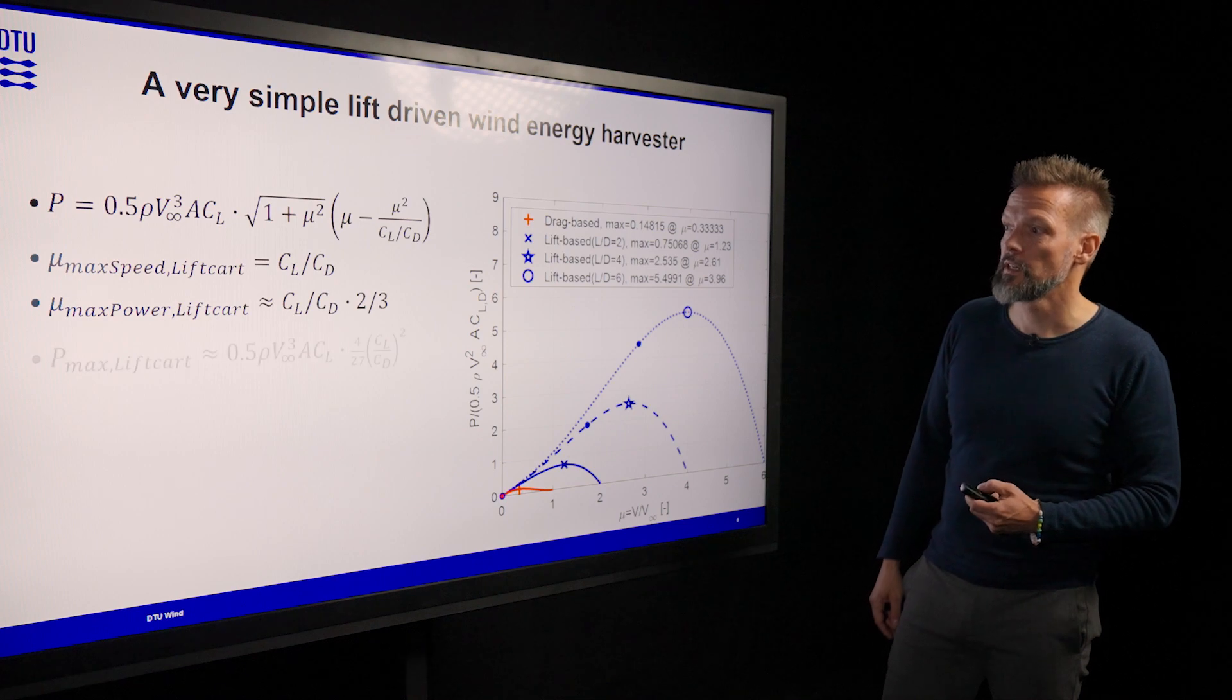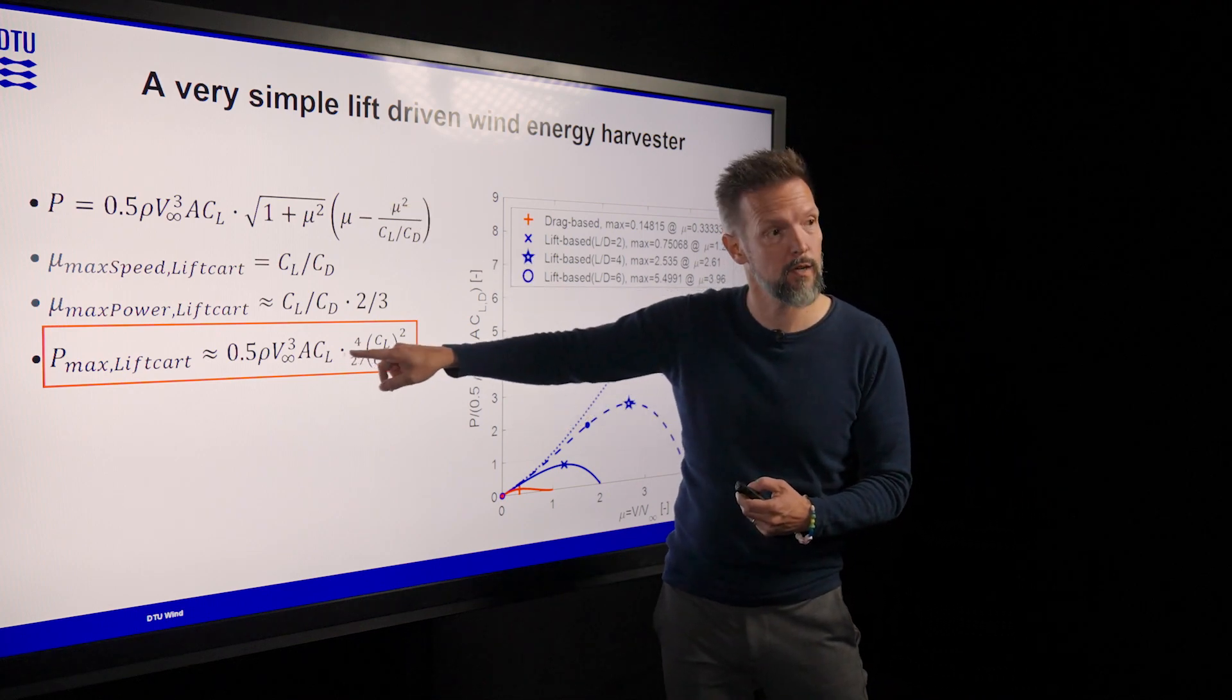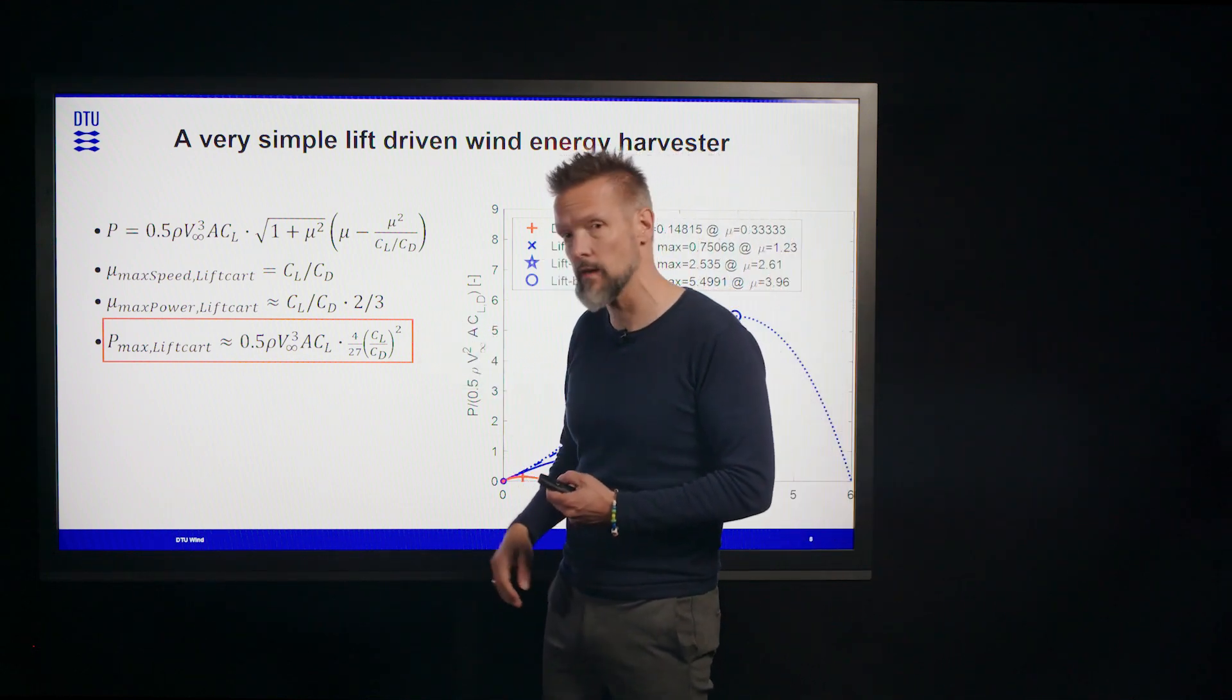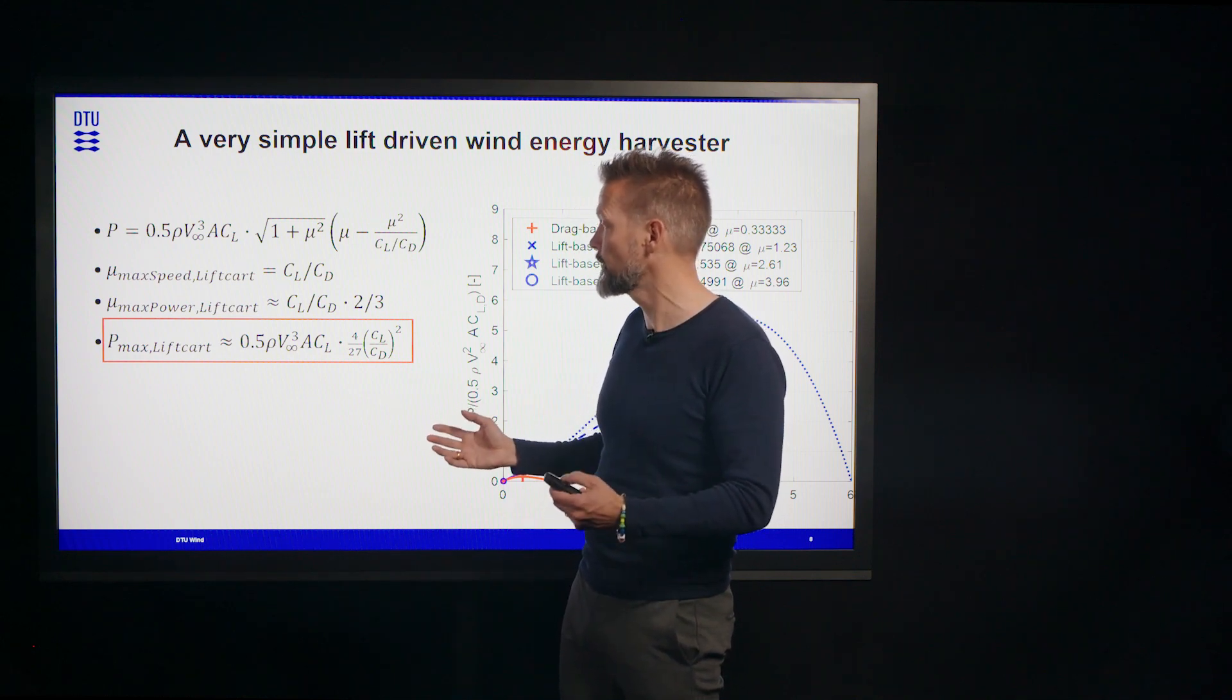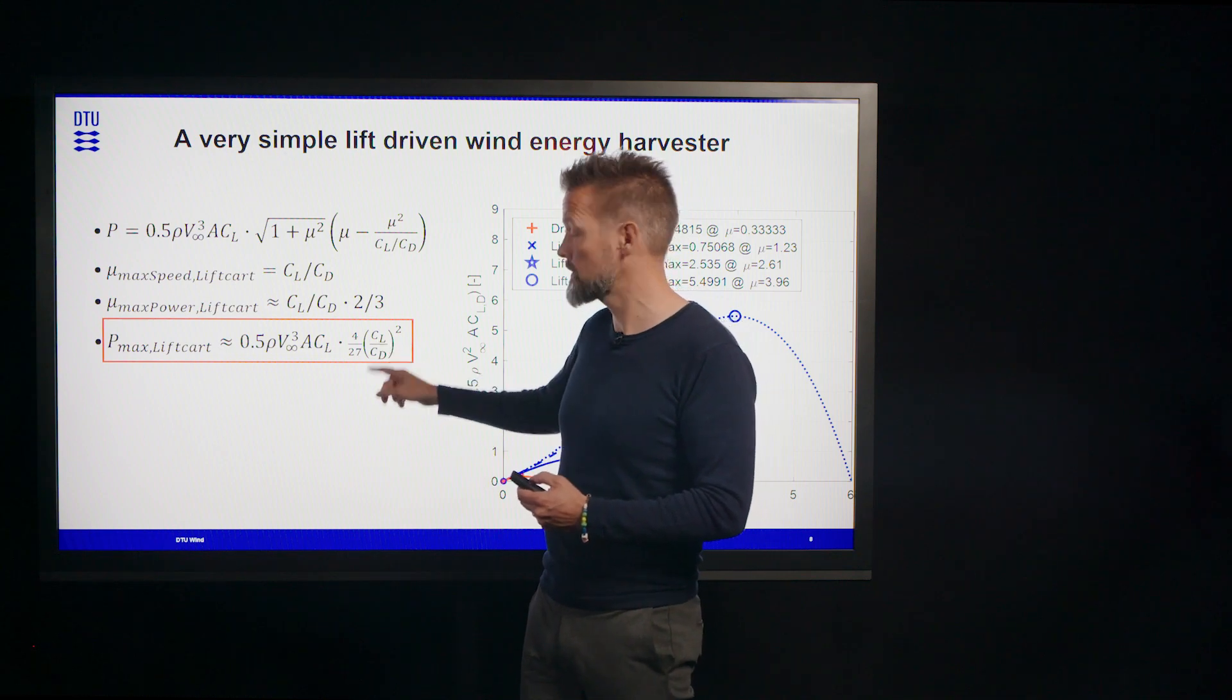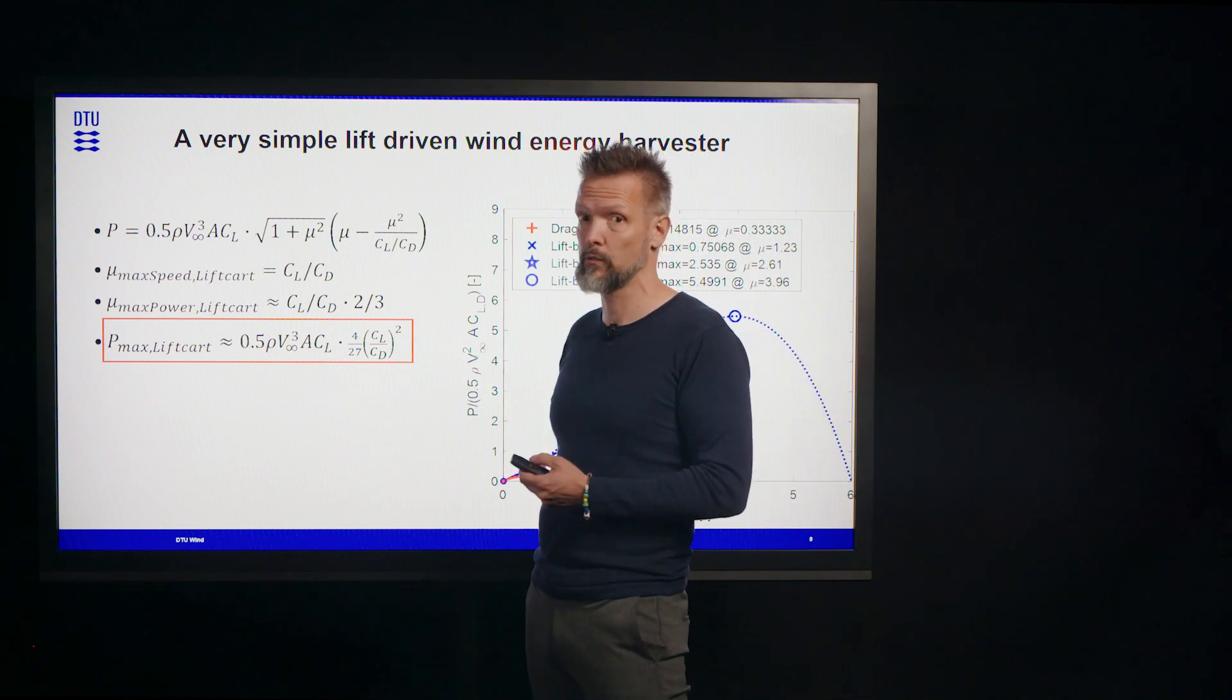And then if you input that, the best lift to drag ratio into this equation, you get the expression for how much power can you get out of the lift cart. And you see that this expression looks very much like the drag one. But there's a significant difference. So there's a lift coefficient here instead of drag, but there's this term, lift to drag squared. And if you put a sailplane on the cart, which has a lift to drag ratio of 50, this will get 50 squared. So a really, really large number.